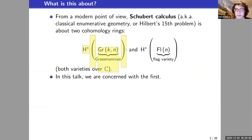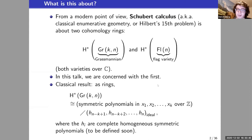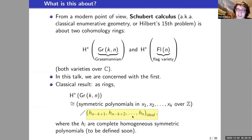We're going to be studying things that generalize this cohomology ring. Classically, it is well known — I think since Borel — what this cohomology ring is as a ring: it is a ring of symmetric polynomials in k variables over the integers modulo the ideal spanned by k consecutive complete homogeneous symmetric polynomials.